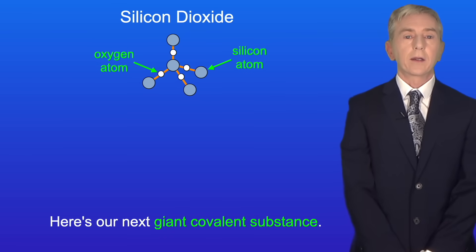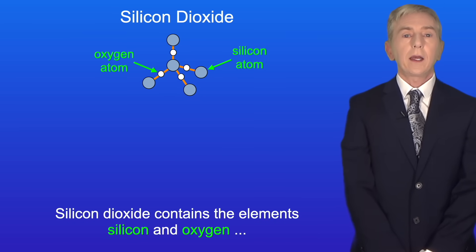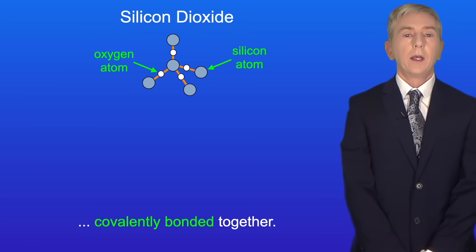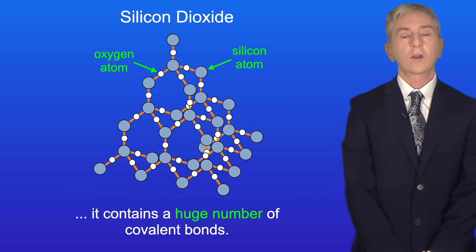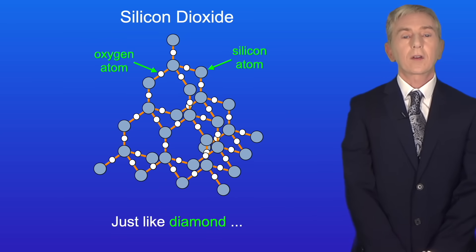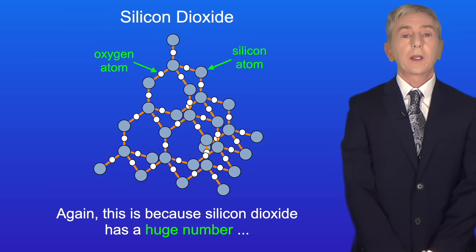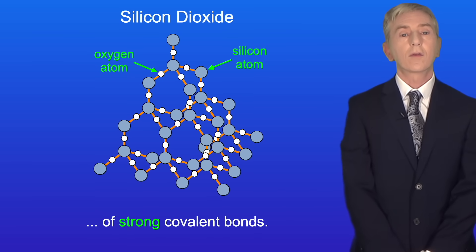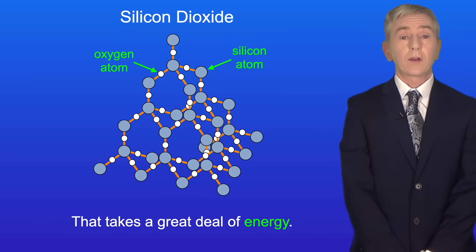Our next giant covalent substance is silicon dioxide, also called silica. Silicon dioxide contains the elements silicon and oxygen covalently bonded together. Because this is a giant covalent molecule it contains a huge number of covalent bonds. Just like diamond, silicon dioxide has a very high melting and boiling point because it has a huge number of strong covalent bonds. In order to melt silicon dioxide these covalent bonds must be broken, and that takes a great deal of energy.